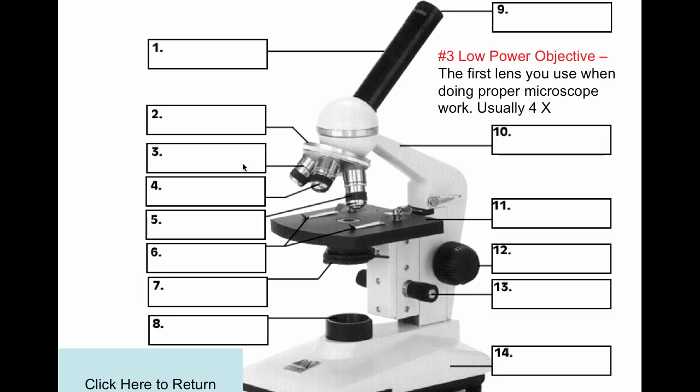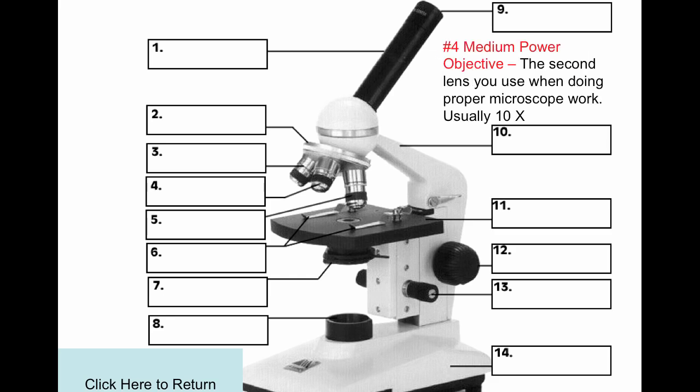Number 3 is the low power objective lens. It's the first lens you use when properly using the microscope. It has a power of 10 times.